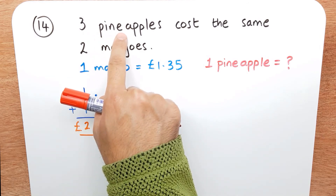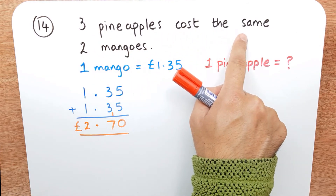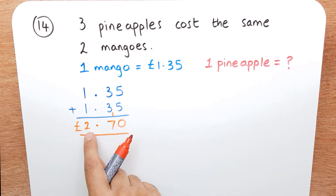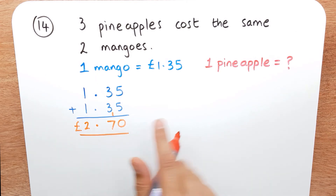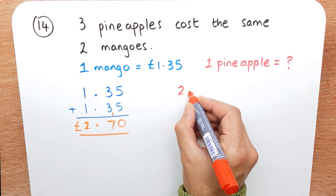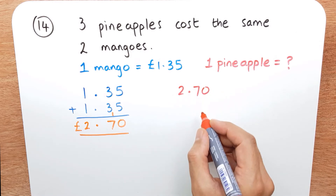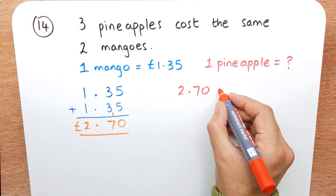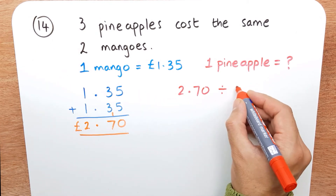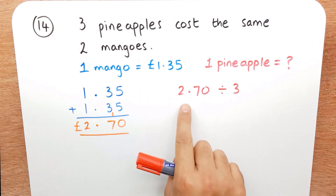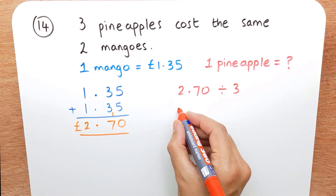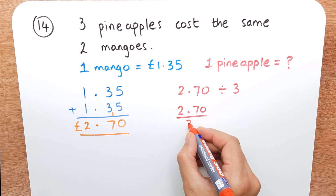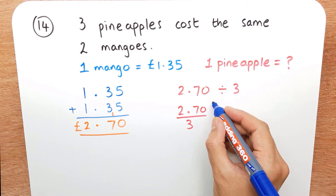Three pineapples cost the same as two mangoes, and two mangoes cost £2.70. So I'm going to divide £2.70 by three to find the cost of one pineapple: two pounds 70 divided by three.